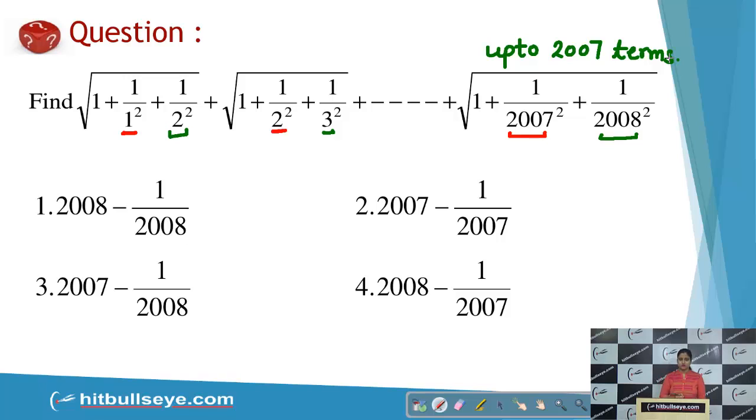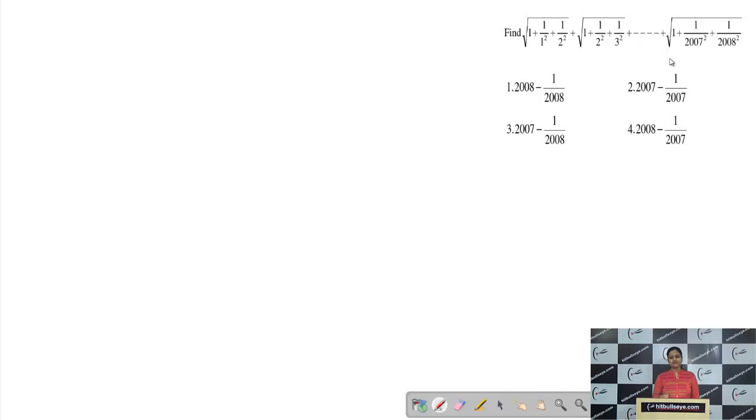Now you can see the options. All the options are in the format of 2007 or 2008. How to solve these kind of sums when the last term is also mentioned or the number of terms is mentioned? You will convert the whole sum in N. So if I take this sum, because it was given that there are 2007 terms, I will replace this 2007 by N.